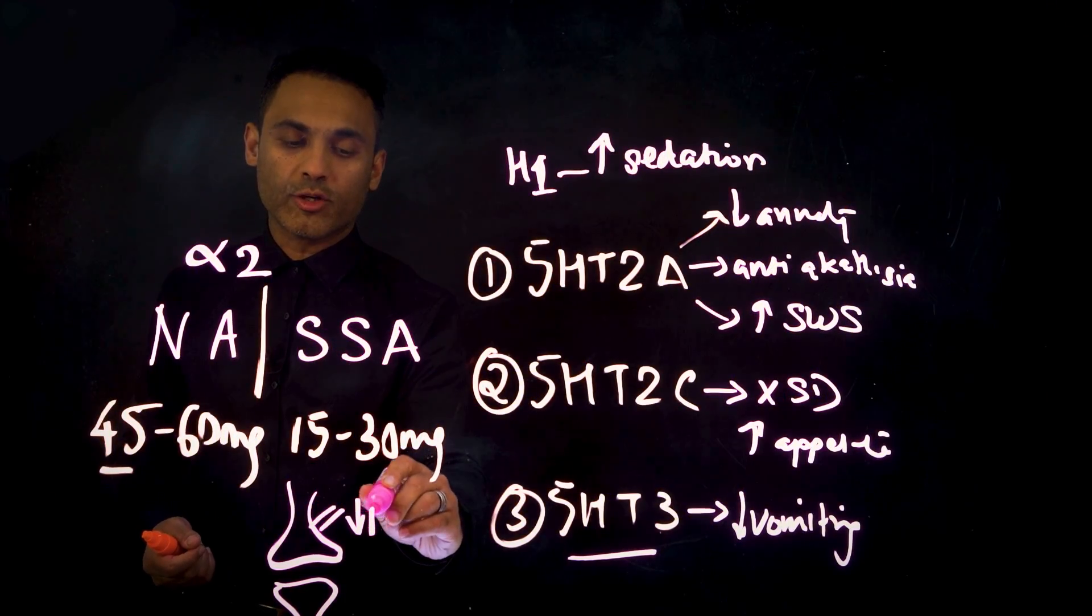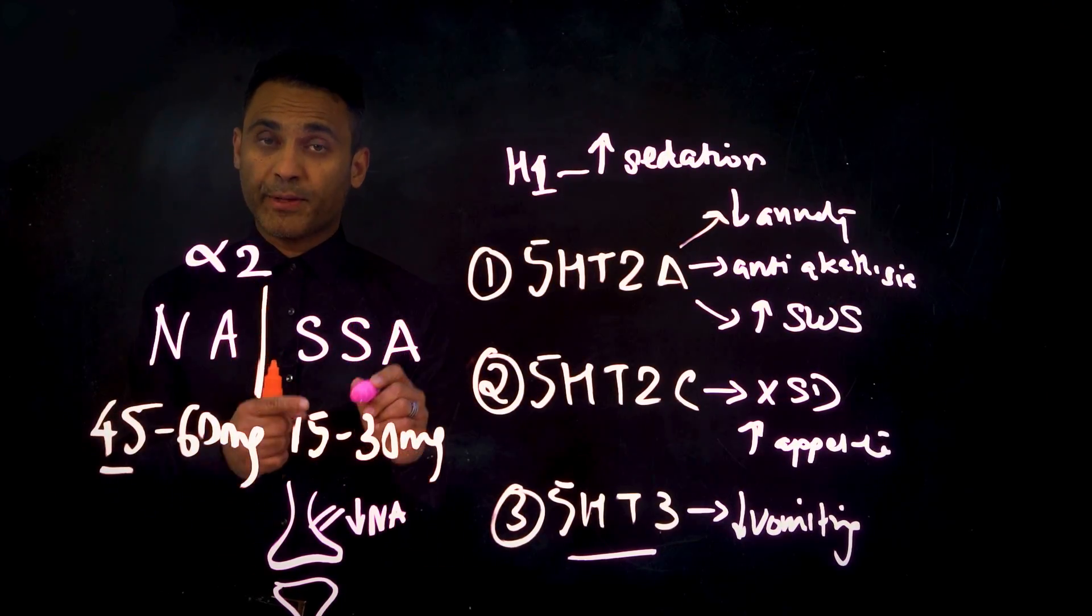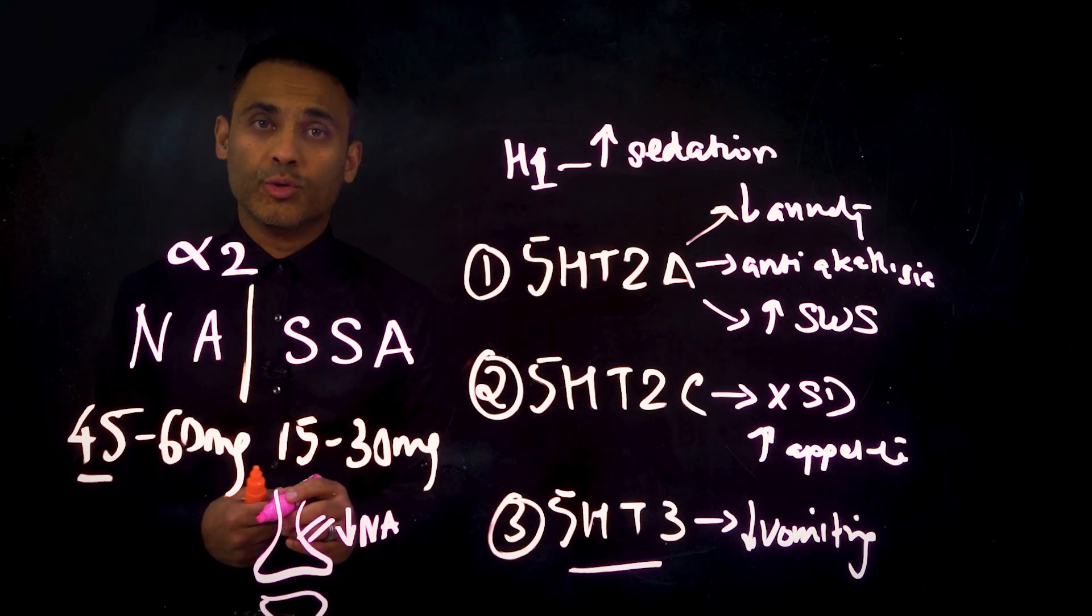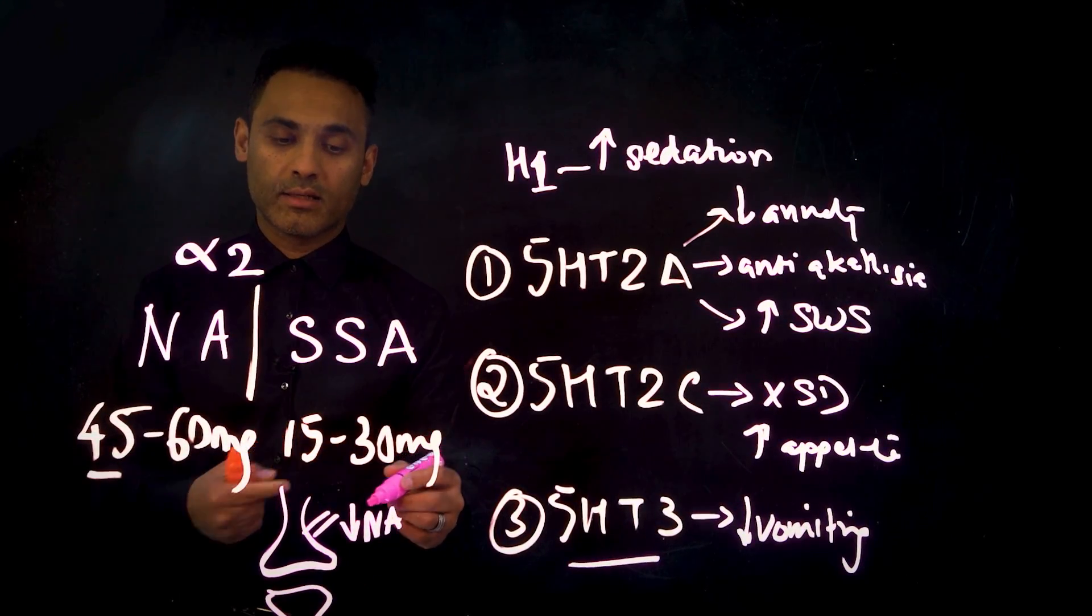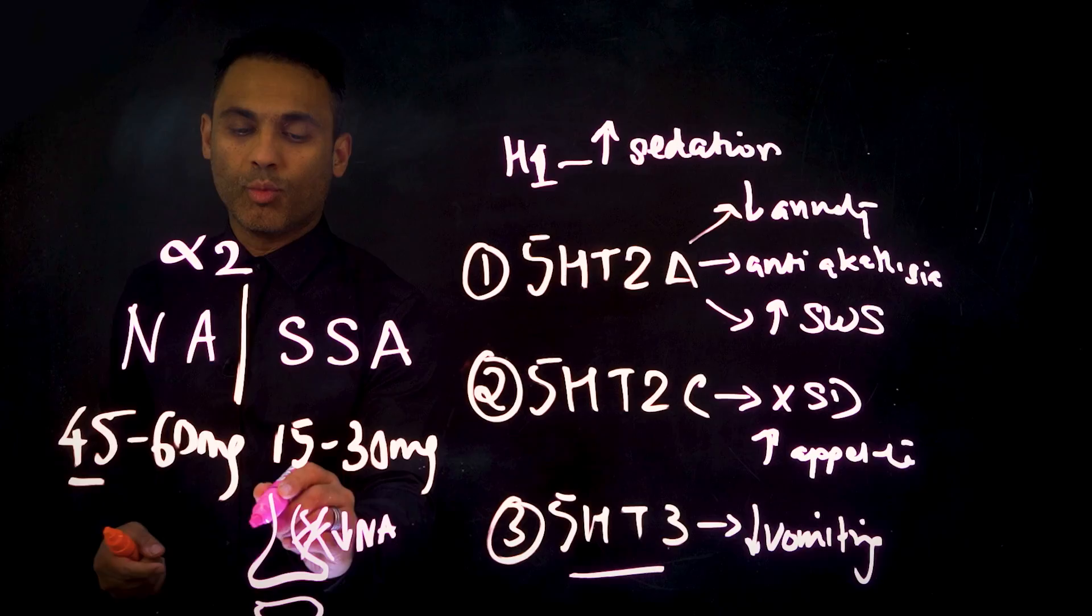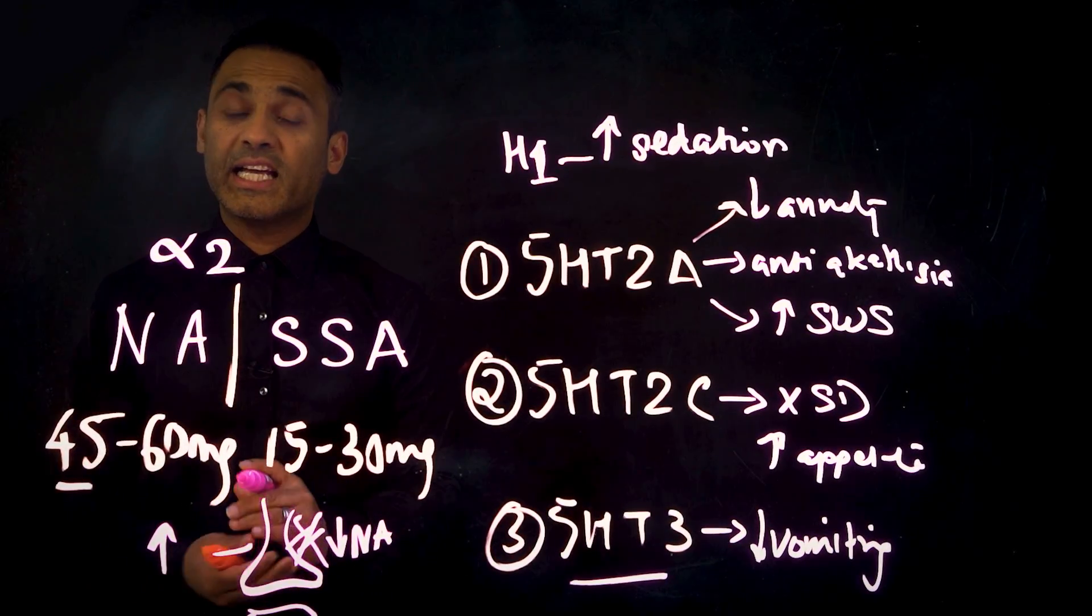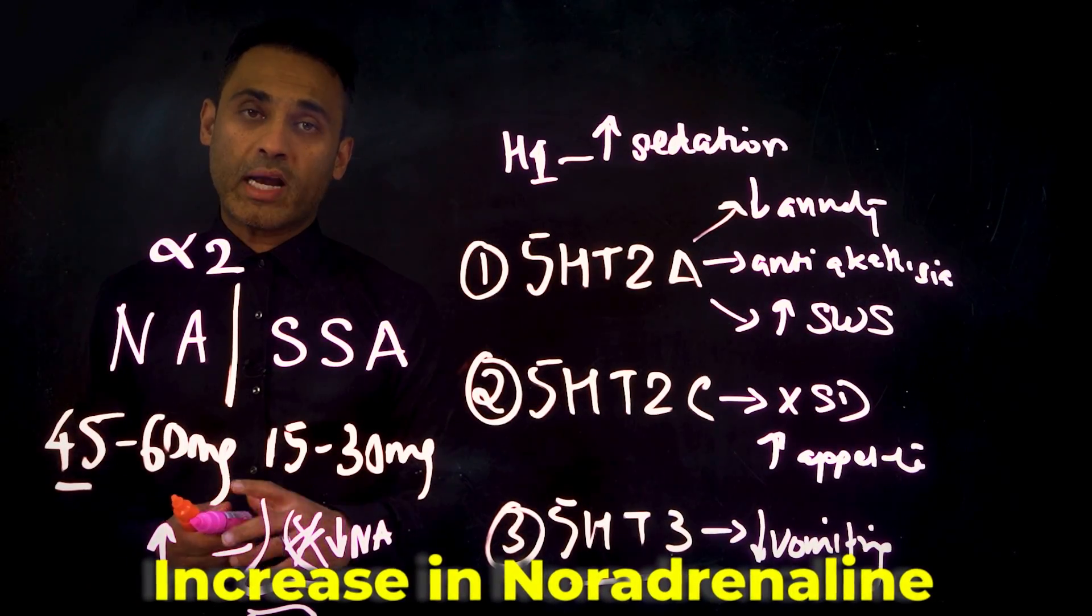So therefore, if a presynaptic receptor is activated, it will reduce noradrenaline. Mirtazapine is an alpha-2 presynaptic antagonist. So by blocking this, what we get is increase in noradrenaline.